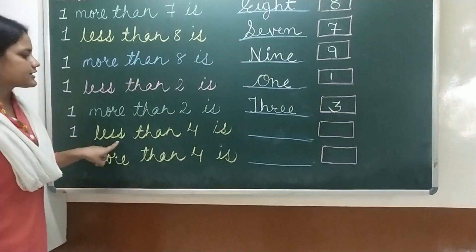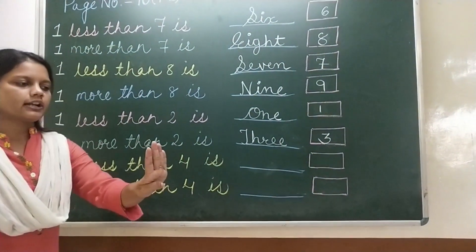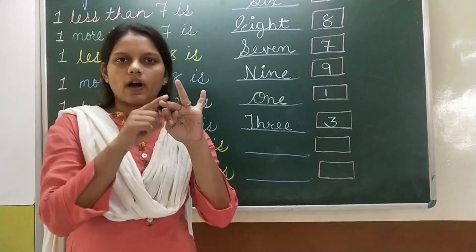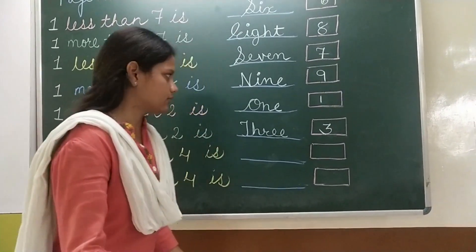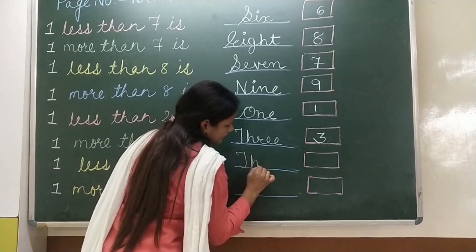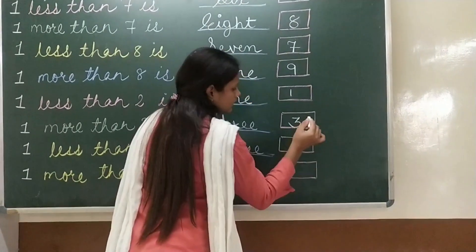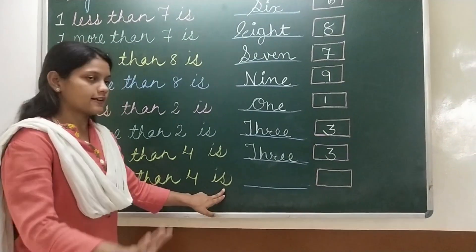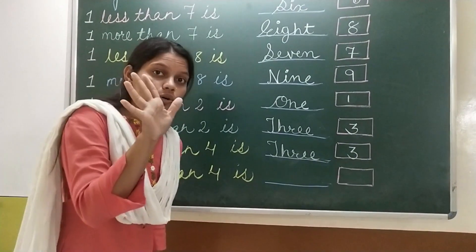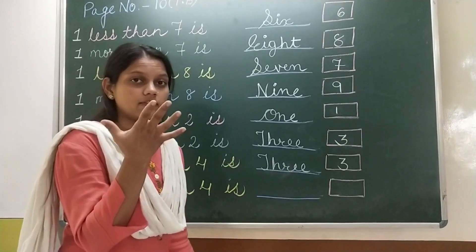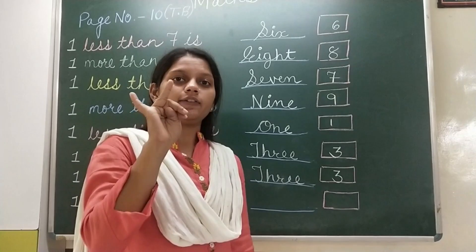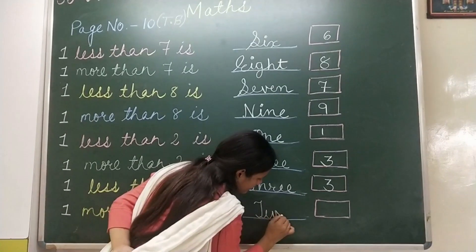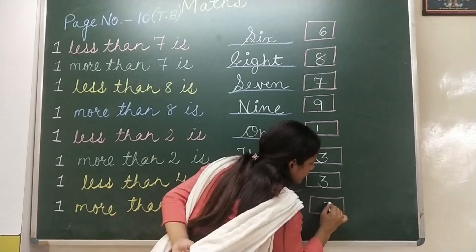Next: 1 less than 4. 4 and 1 less — cut 1. How many fingers left? 1, 2, 3. So write THREE — 3, and number 3 in the box. Next: 1 more than 4. 4 and 1 more — more means add 1. How many fingers? 1, 2, 3, 4, 5. Write FIVE — 5, and number 5 in the box.